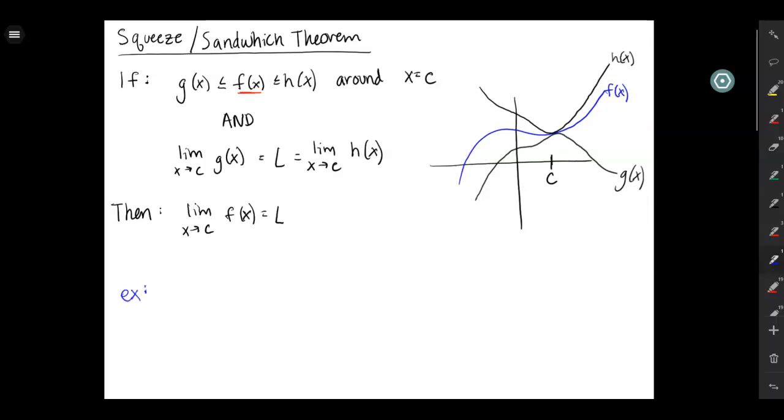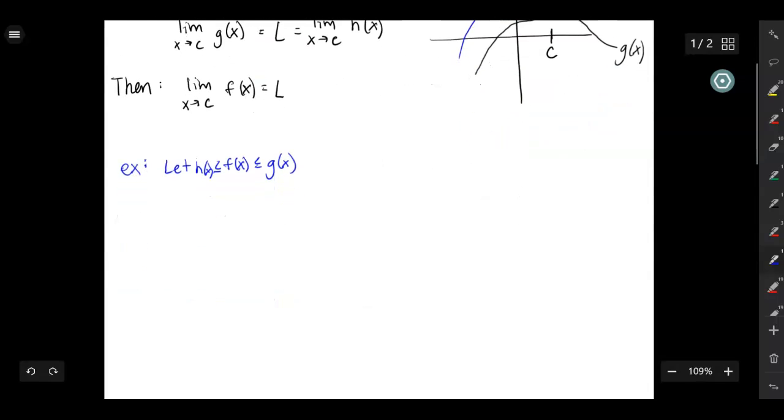So a problem could say, let f of x be between g of x and h of x. And it could just tell you that this inequality holds. And then it might say, if you've got this function f of x sandwiched between h of x and g of x, and it wants you to find the limit as x approaches 3 of f of x.